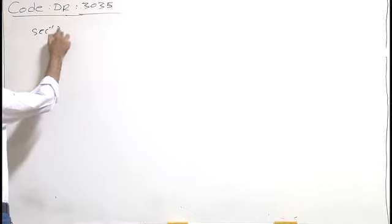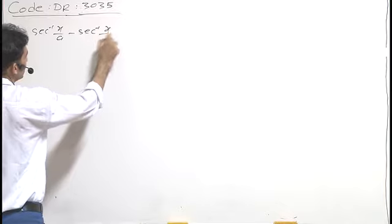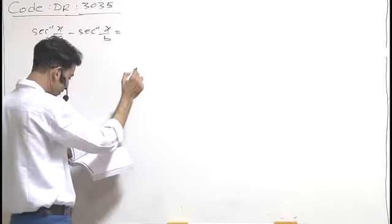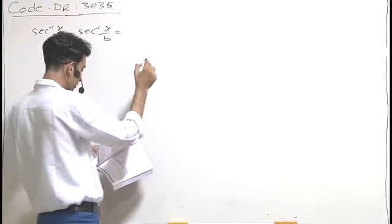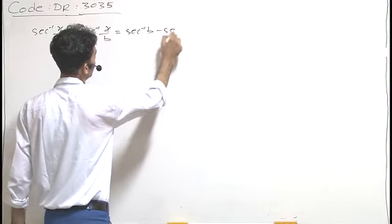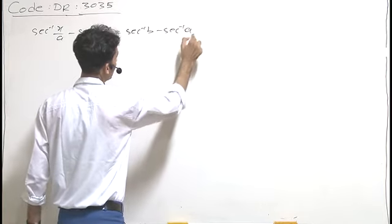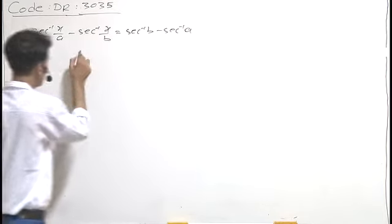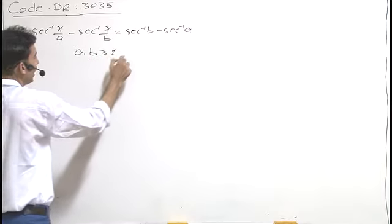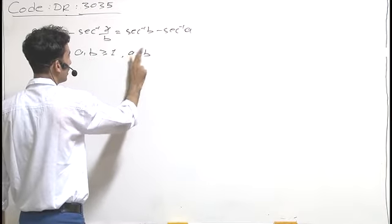Sec inverse x by A minus sec inverse x by B equals sec inverse B minus sec inverse A. Here it is given that both A and B are greater than or equal to 1, and A and B are unequal.